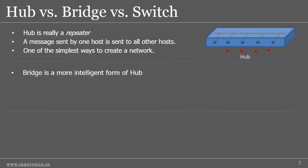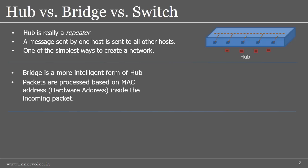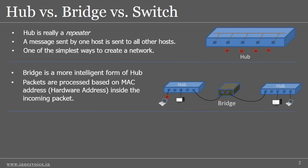So what is a bridge? The traditional definition of a bridge is that it connects two LAN segments, so a bridge usually has two ports. A bridge is also a more intelligent form of a hub. A bridge operates at layer two of the OSI model because it relies on the MAC address to forward a packet. A bridge is not a practical device for end hosts, so it is usually connected to hubs.